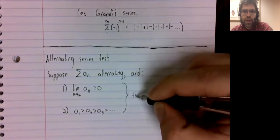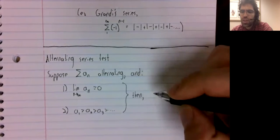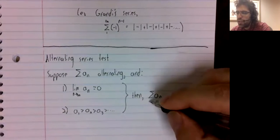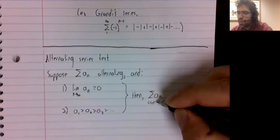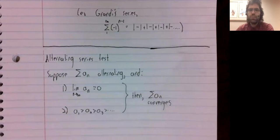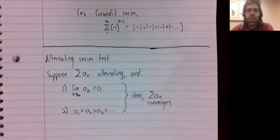If we have both of these conditions, then this series converges. So, just like the nth term test can only tell you when a series diverges, the alternating series test can only tell you a series converges.